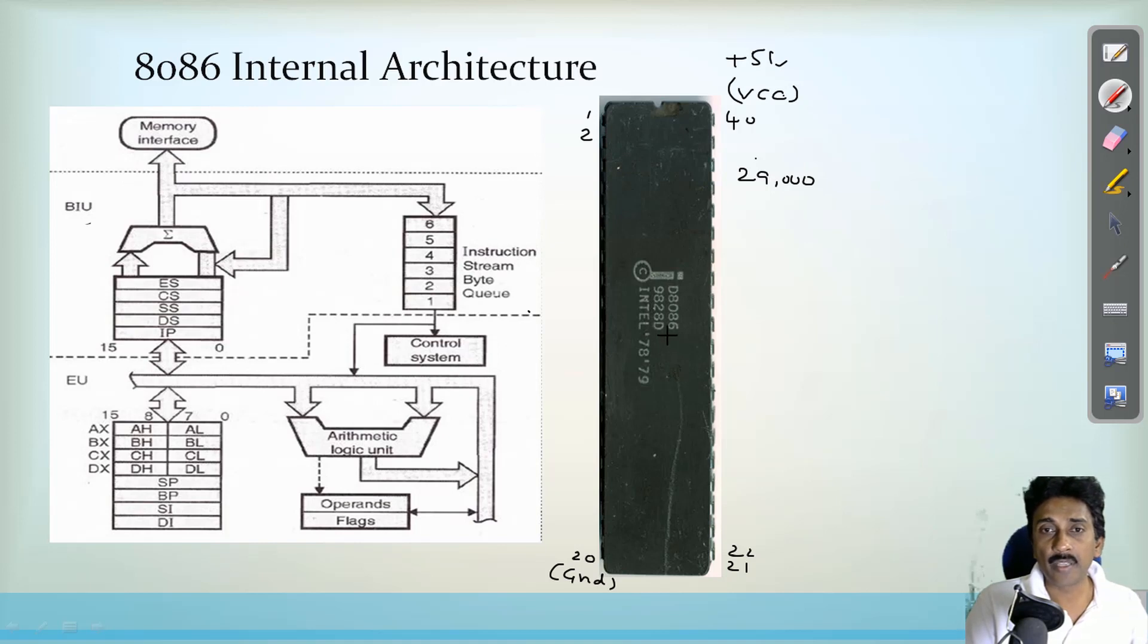By the way, this 8086 microprocessor was manufactured by the Intel company during the period of 78 and 79. This is the simple history of the 8086 microprocessor.